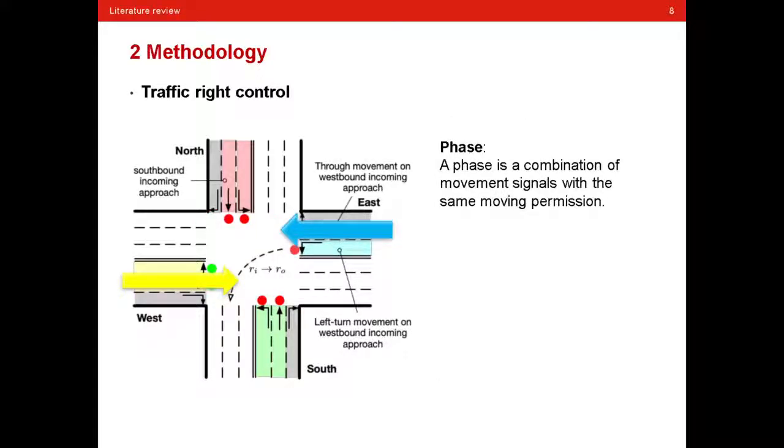Based on the definition of both, we can have a more detailed statement in traffic signal control. First, we talk about phase. A phase is a combination of movement signals with the same moving permission. And then, from phase, we have signal plan.